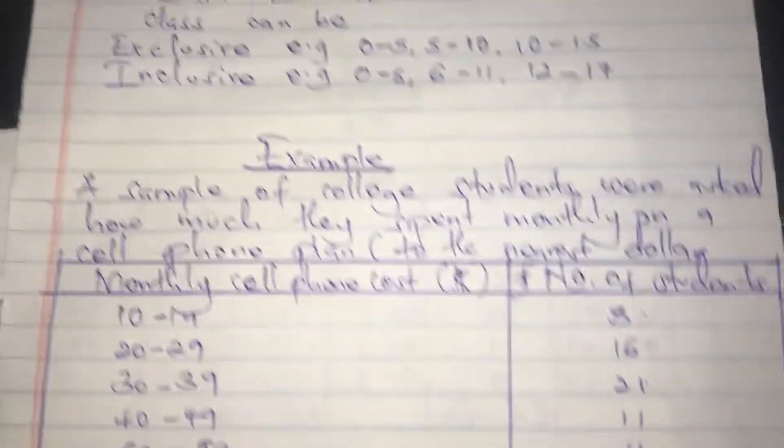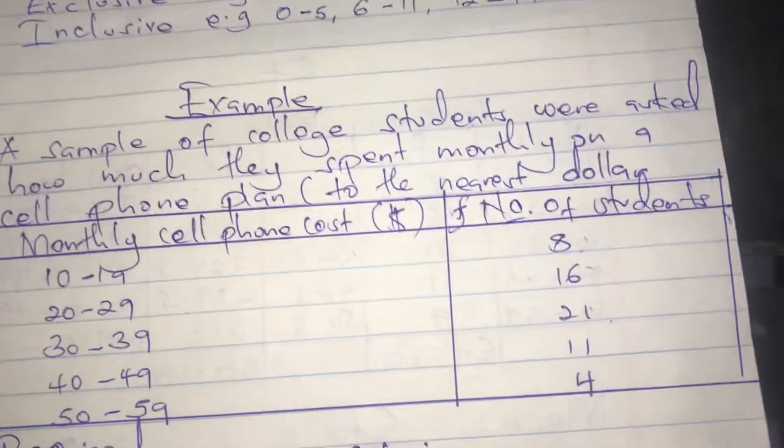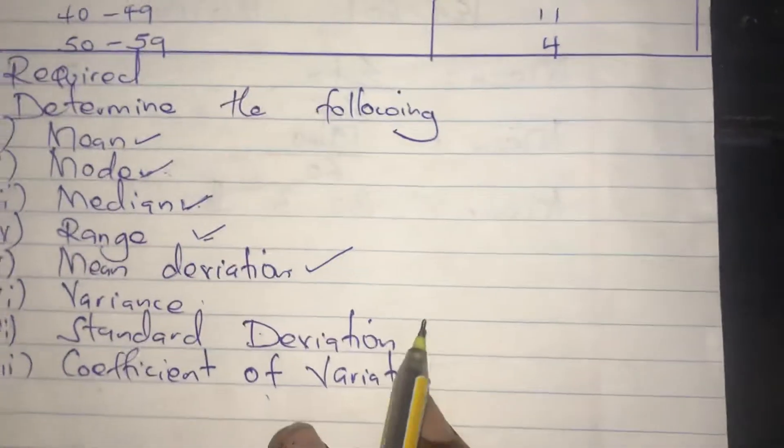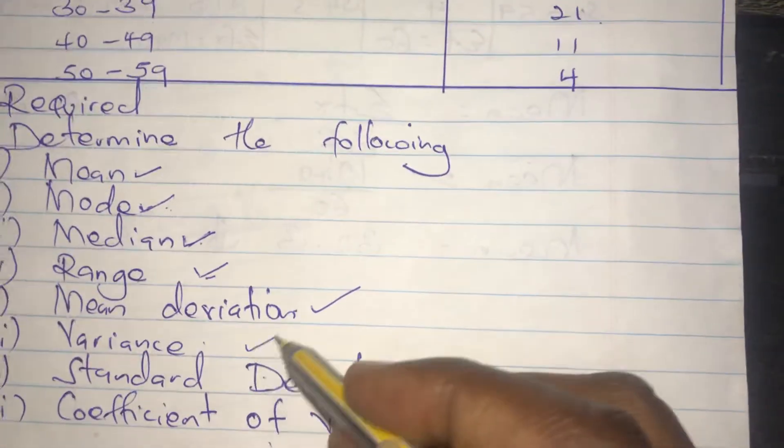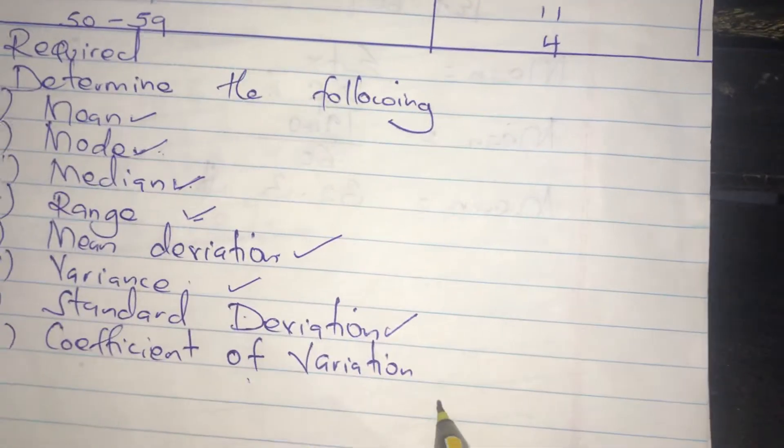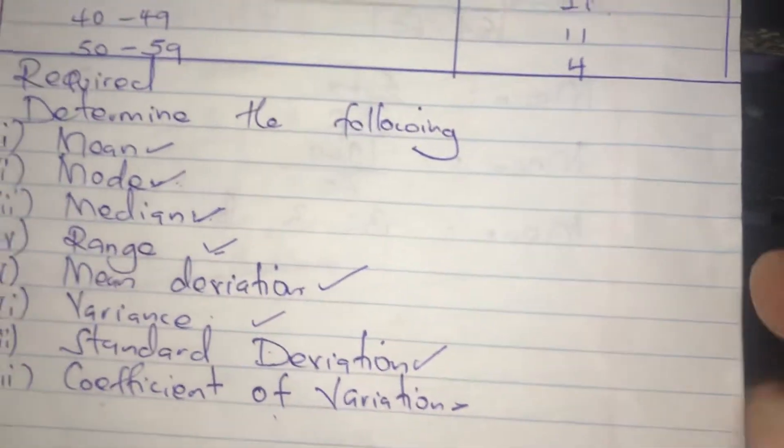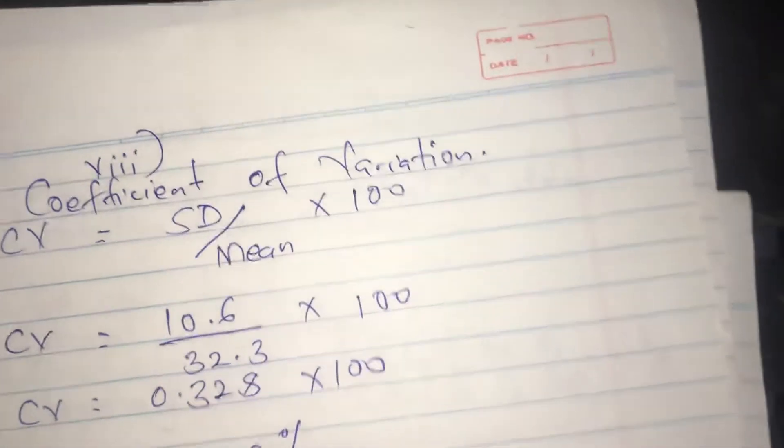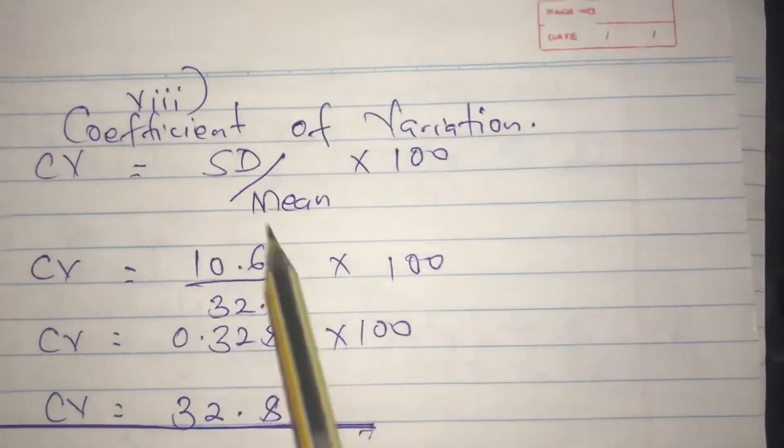Welcome to my channel. We are concluding grouped data, and in the previous video we looked at variance and standard deviation. In this video we are going to be concluding with coefficient of variation. The formula for calculating coefficient of variation is standard deviation divided by mean times 100.